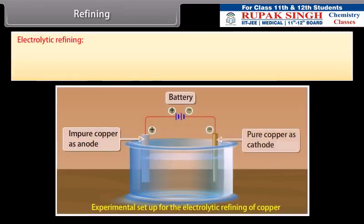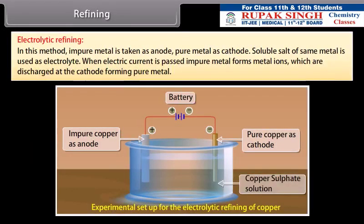Electrolytic refining: In this method, impure metal is taken as anode, pure metal as cathode. Soluble salt of same metal is used as electrolyte. When electric current is passed, impure metal forms metal ions which are discharged at the cathode forming pure metal. For example, copper, zinc and aluminium.